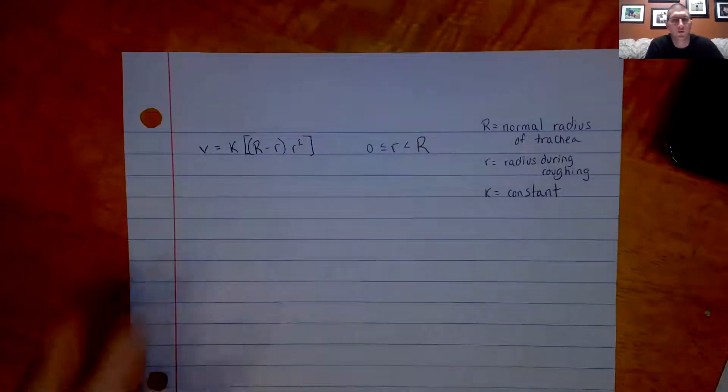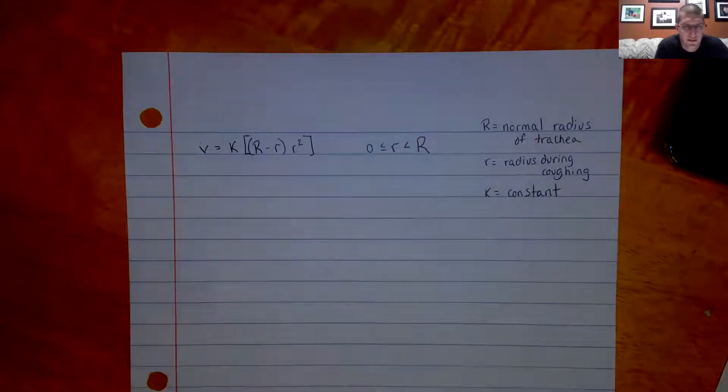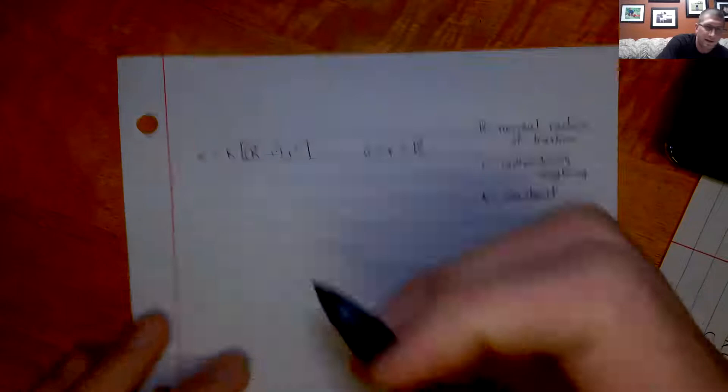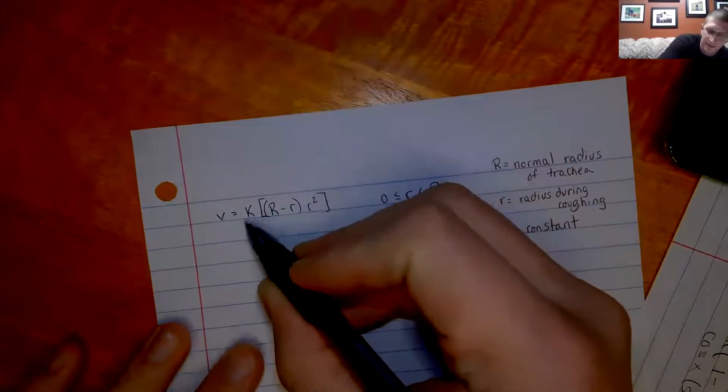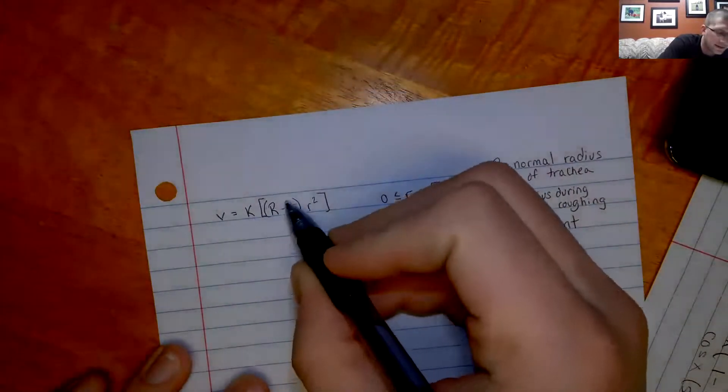So let's go ahead and look at what we have here. So like I said, capital R is the normal radius of the trachea, lowercase r is how the radius is changing during coughing, and k is a constant. So if we want to take the derivative, k the constant, we're not going to worry about right now. We're just going to keep that along for the ride.